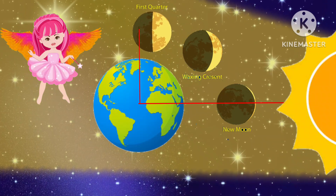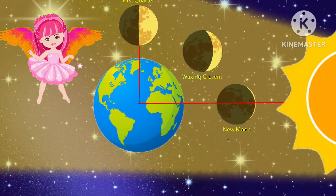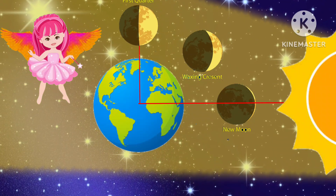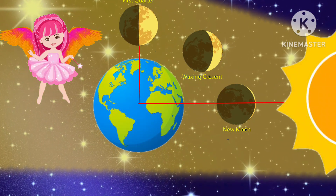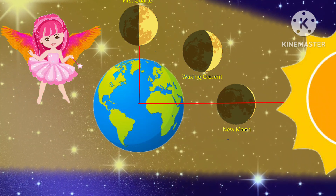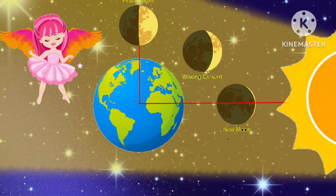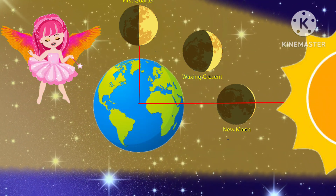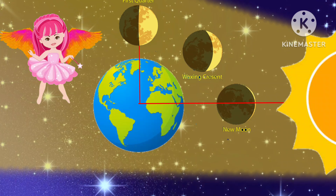In about a week, when the sun and the earth are at a 90-degree position to the moon, we can see the half-lit portion of the moon. This phase is called the first quarter.